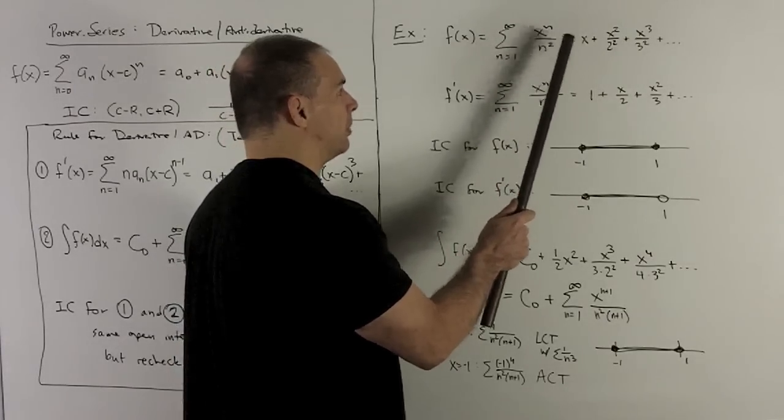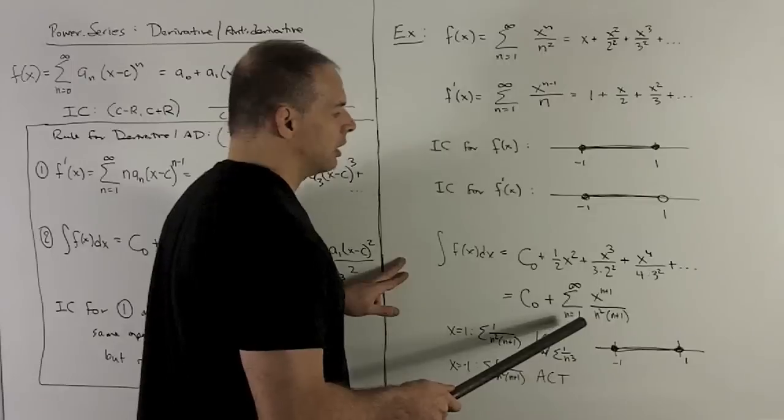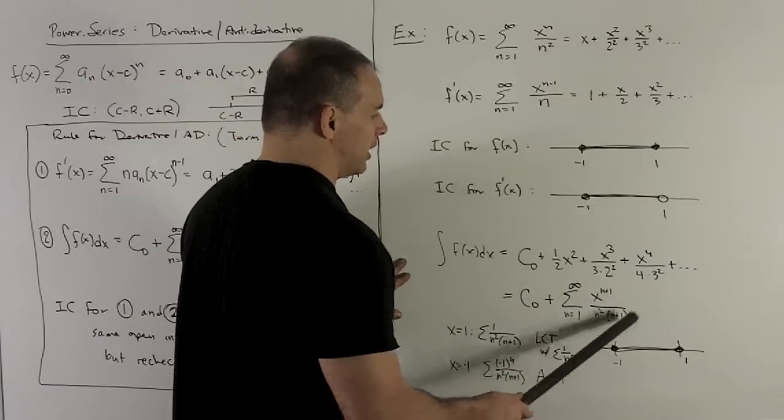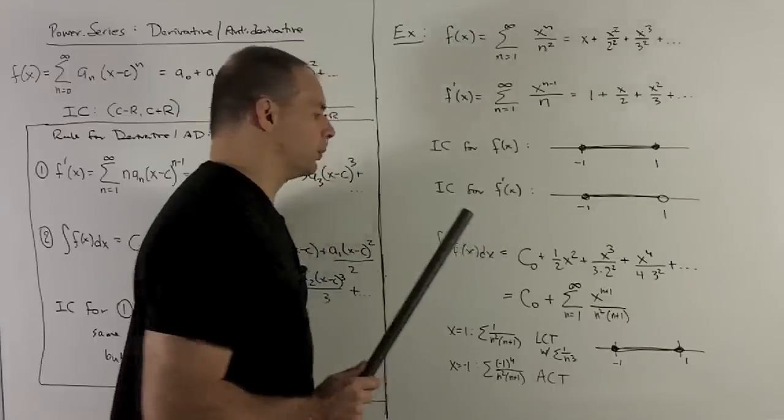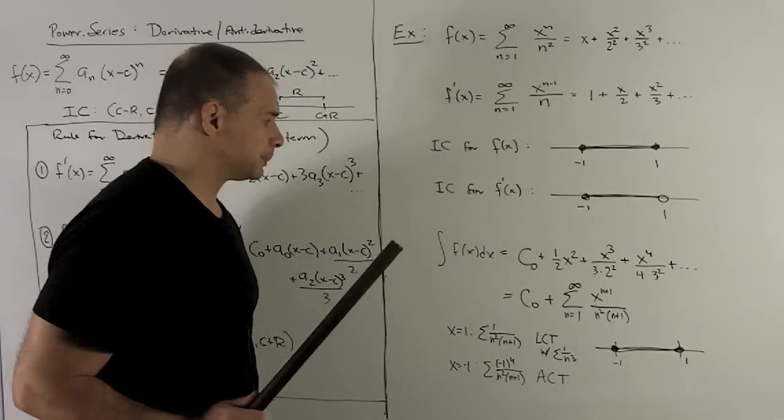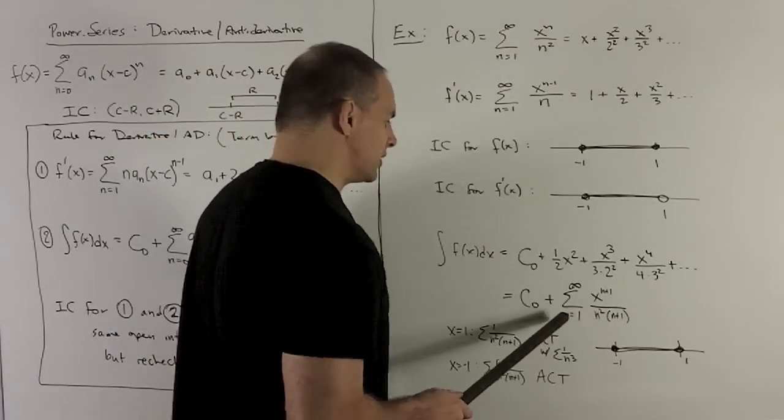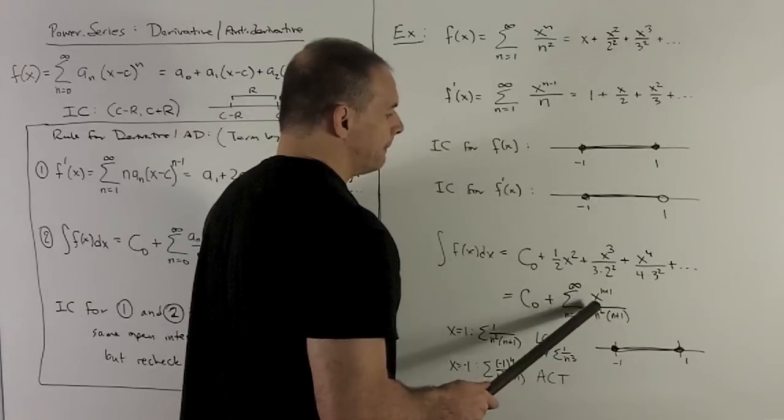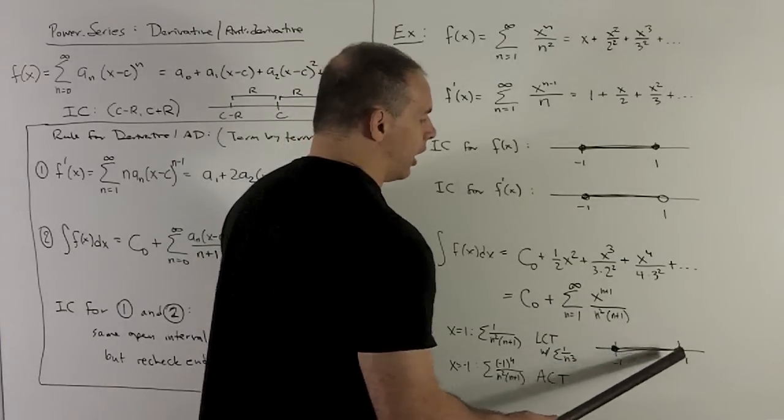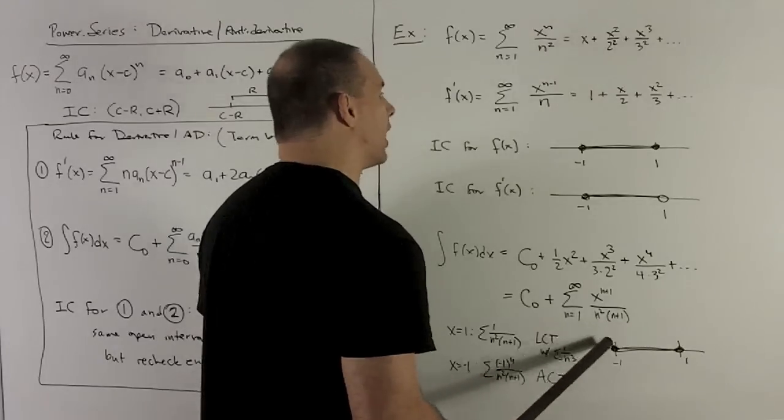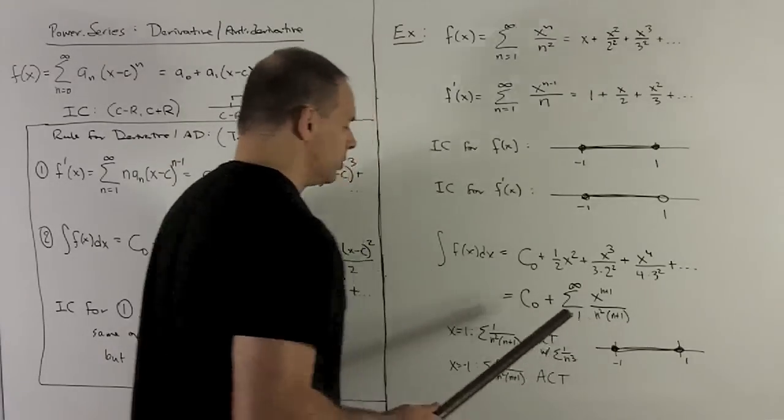So if you take a look at this thing, we can write out the first few terms here just to convince ourselves that we were doing things right. So let's take a look. We're going to have interval of convergence going from minus one to one. We don't know if the endpoints are in yet or not. We'll have to check that. So let's take a look.